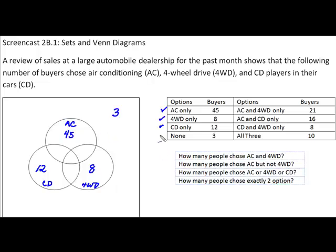Now we're going to deal with people that chose two options only. The first people to do that chose air conditioning and four-wheel drive, and there were 21 of those. I want it to be within the intersection of air conditioning and four-wheel drive but not touching CD players at all. So that's why I put it at the outer level of this particular football shape that shows the intersection of air conditioning and four-wheel drive.